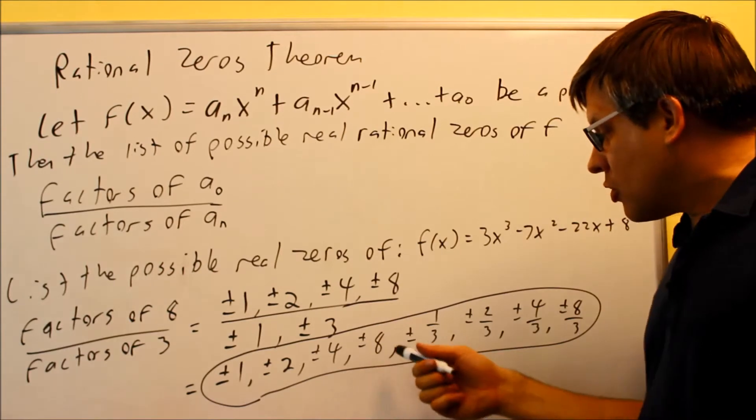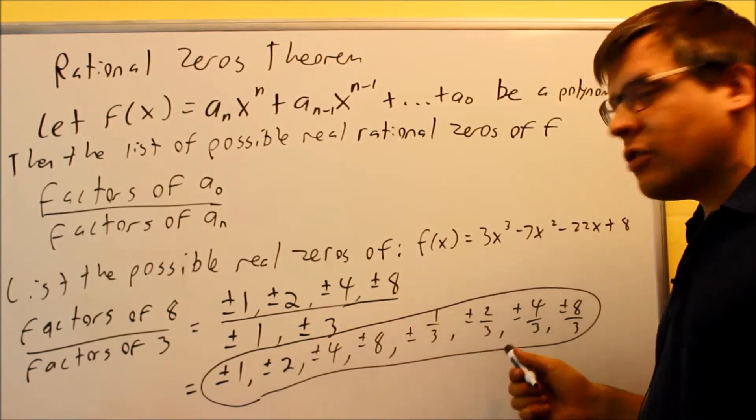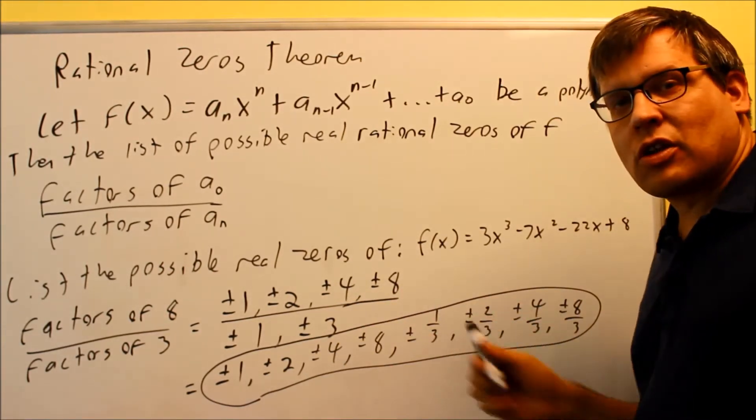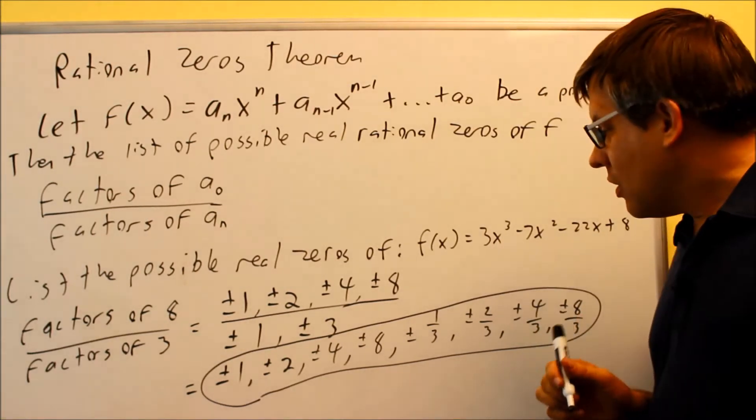It might be one or more numbers, but you'll see the graph will cross at least once on one of the numbers on this list. That's what the rational zero theorem says.